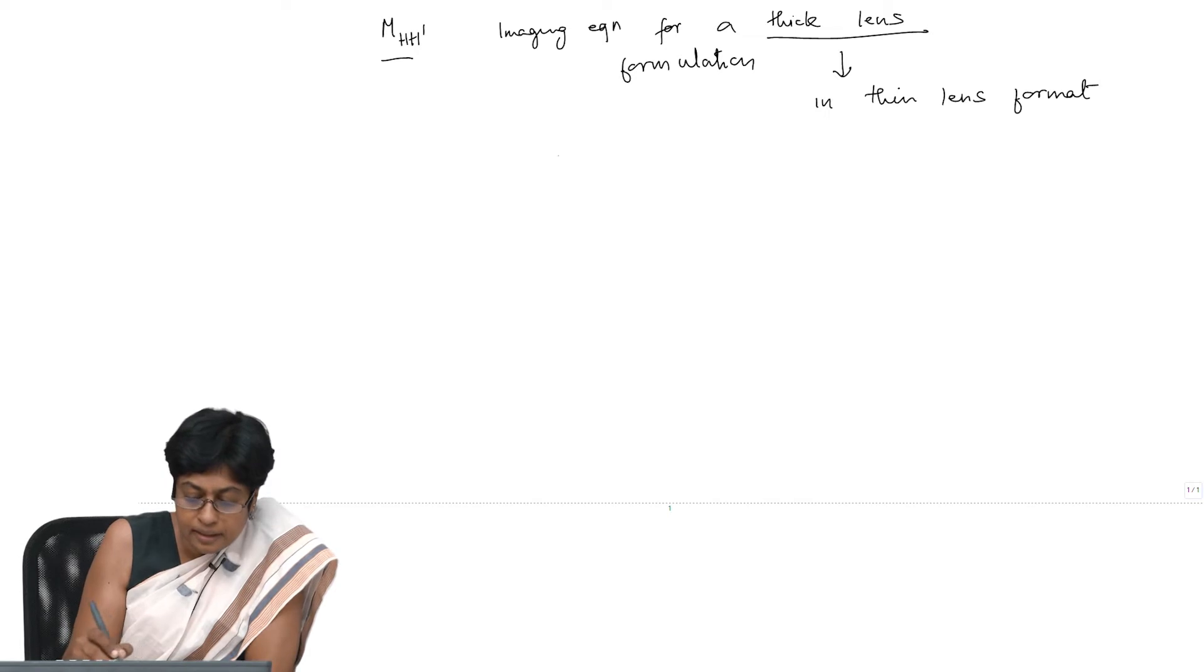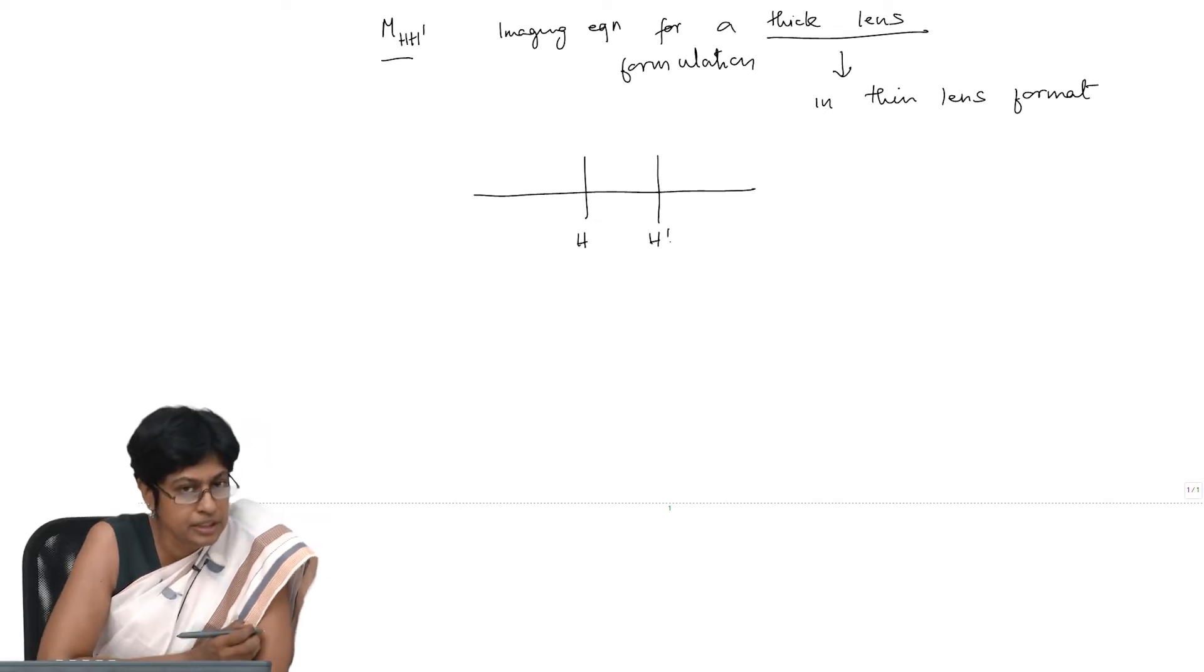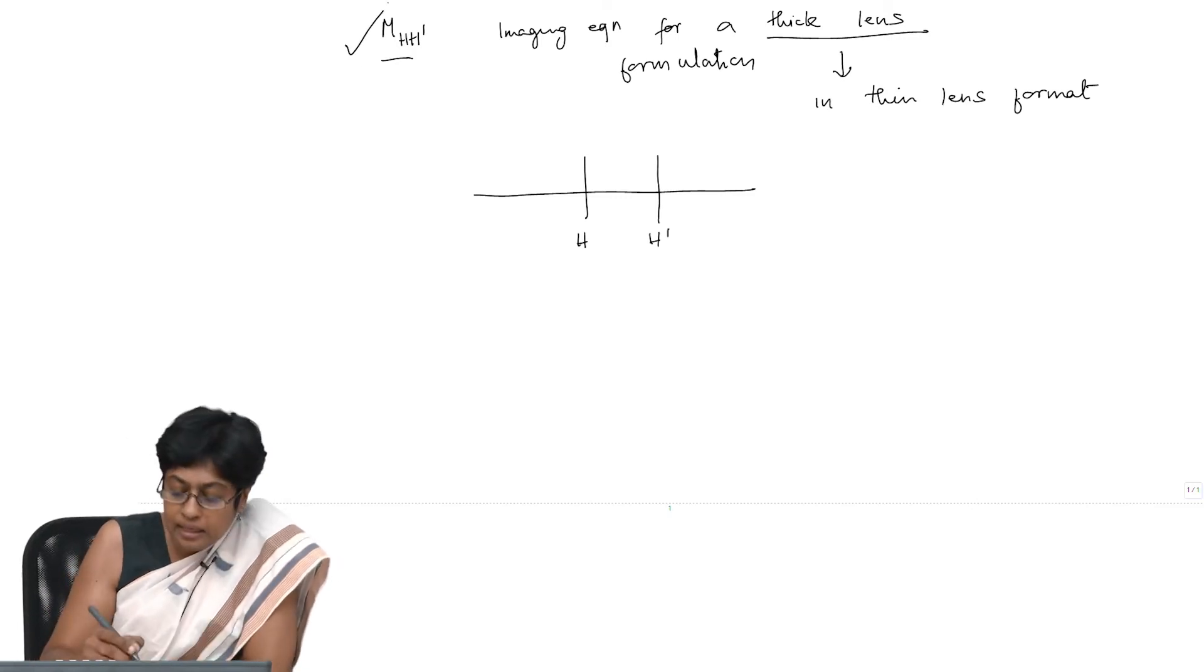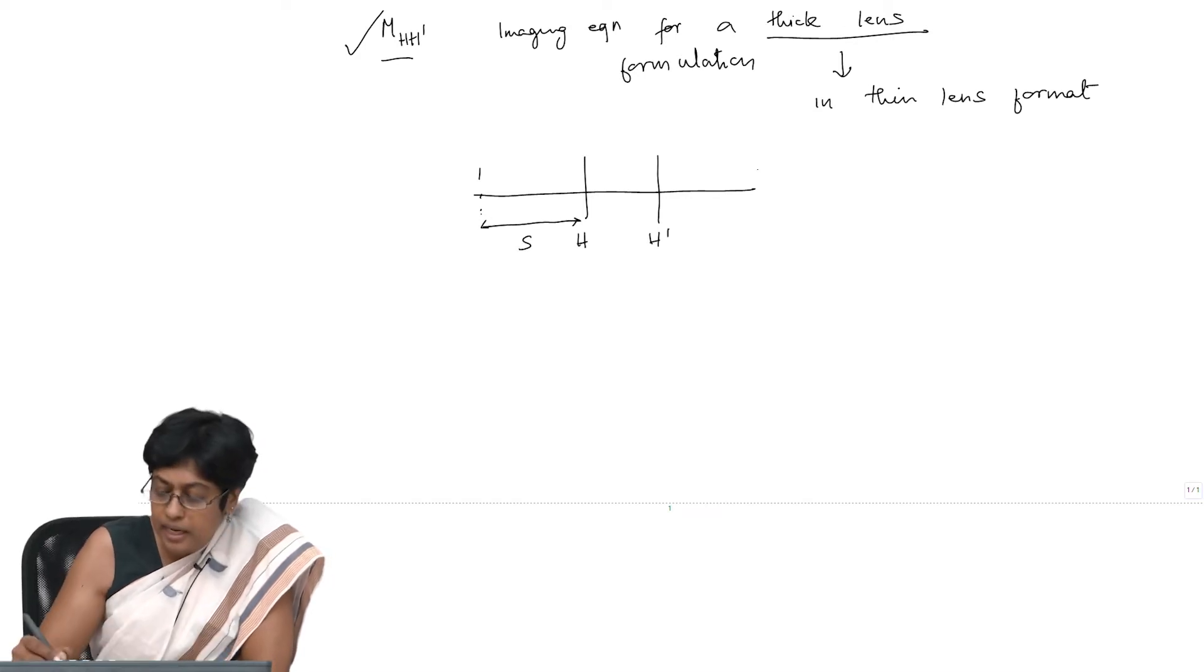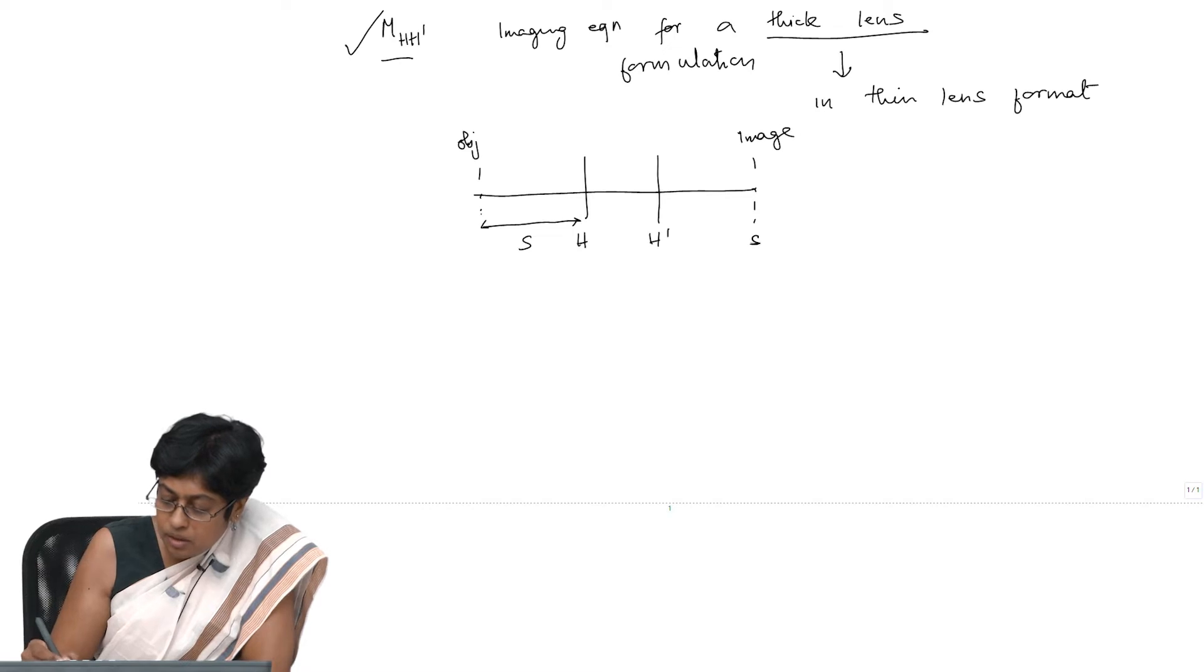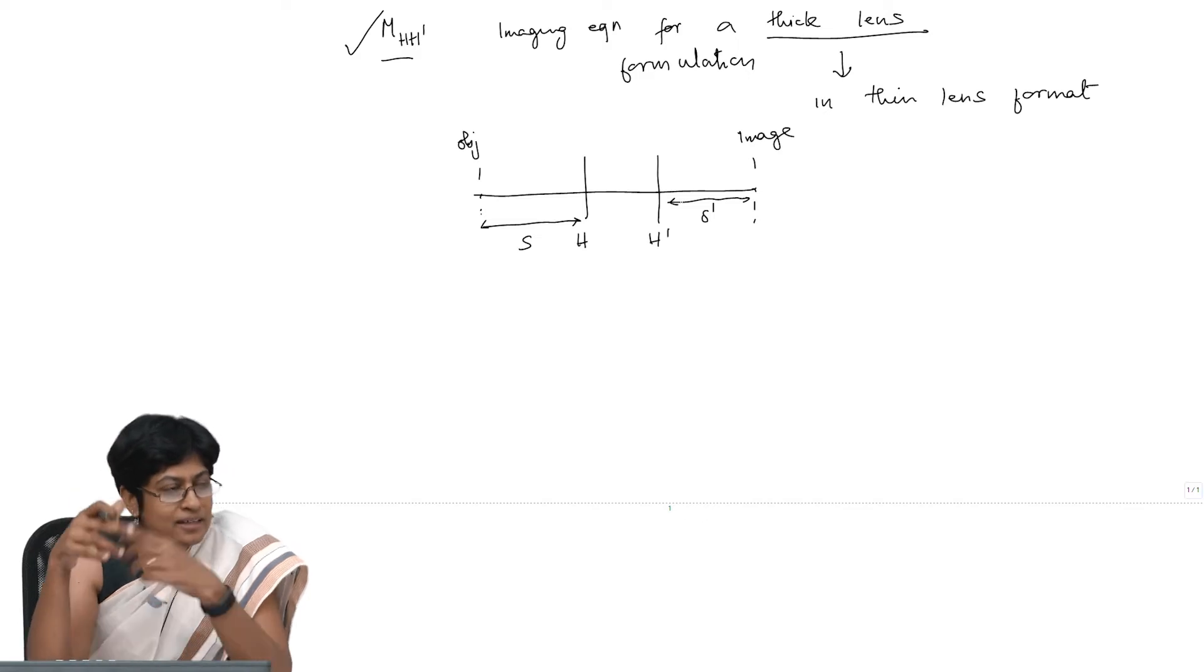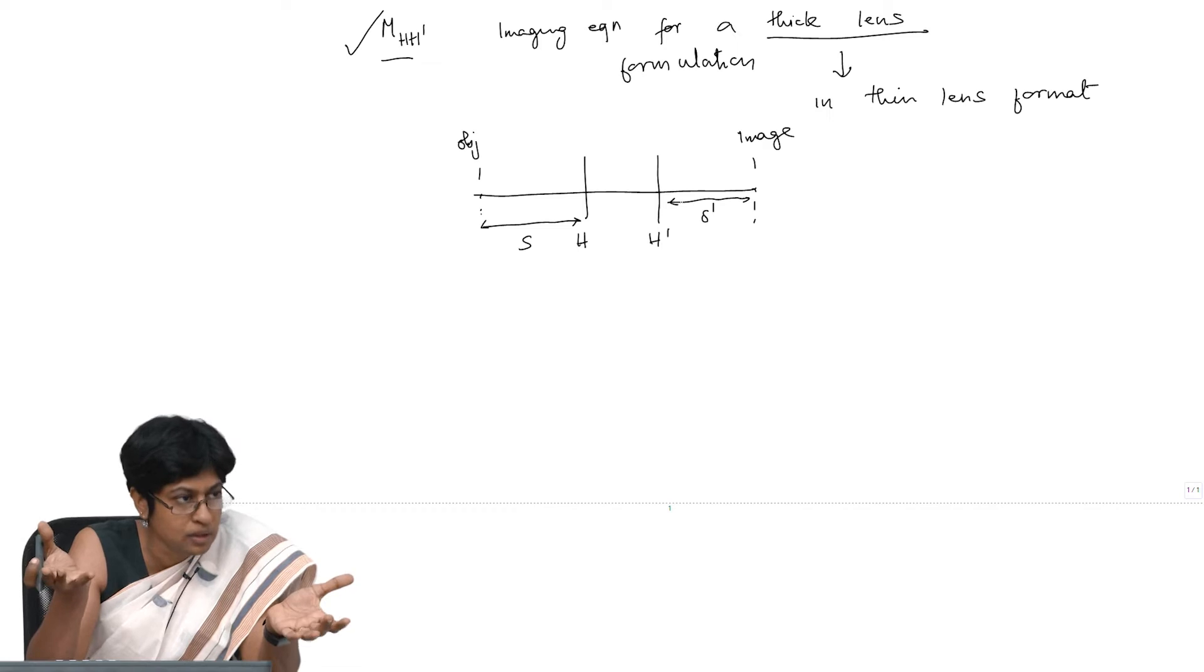I want to get to an imaging equation for my thick lens—let us say for a thick lens formulation, but this thick lens is now in thin lens format. I will now say that means I have my system that is defined by these planes H H dash. I have this matrix. I now have some distance, and that is my object distance, and we will call this S, and I have an image. My object is in this plane, my image is in this plane. I call this S dash.